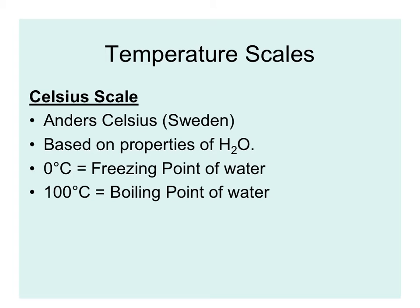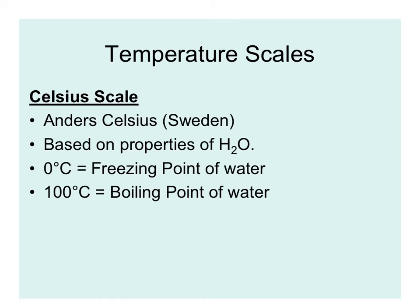The Celsius scale was developed by Anders Celsius, who was from Sweden. It's based on the properties of water: the freezing point of water is 0 degrees Celsius and the boiling point is 100 degrees Celsius. We call this a centigrade scale because between the freezing and boiling points of water there are 100 increments. The Celsius and Kelvin scales are both used in the metric system and make a lot of logical sense.